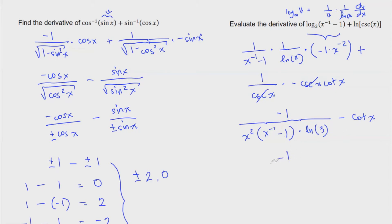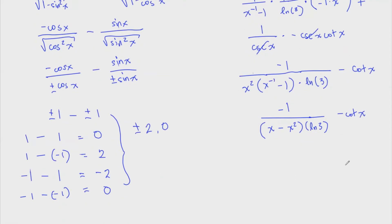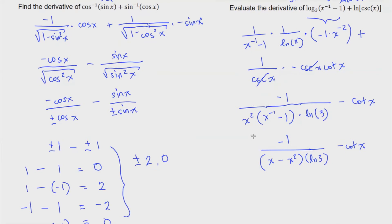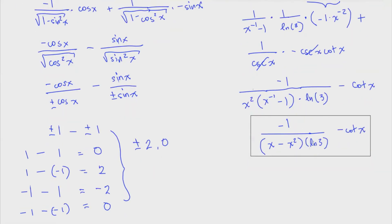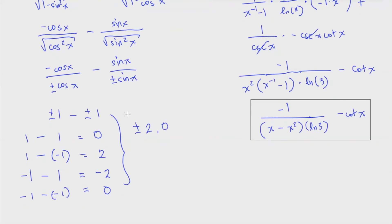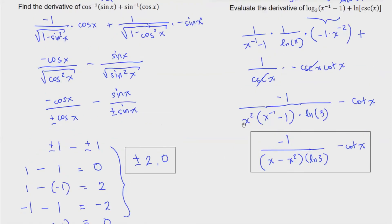So let's simplify further. We have negative one over x minus x squared, and then we multiply this with ln of three, then minus cotangent of x. This is our answer. You can also express this in terms of logarithm if you want, as log of three base e, but I'll leave it here. This is the final answer — you can simplify further using other rules, but this is the answer for that expression.